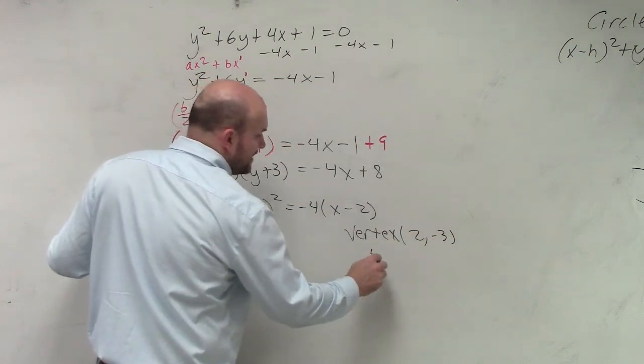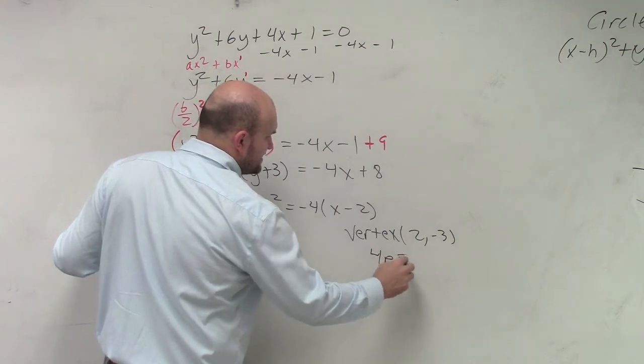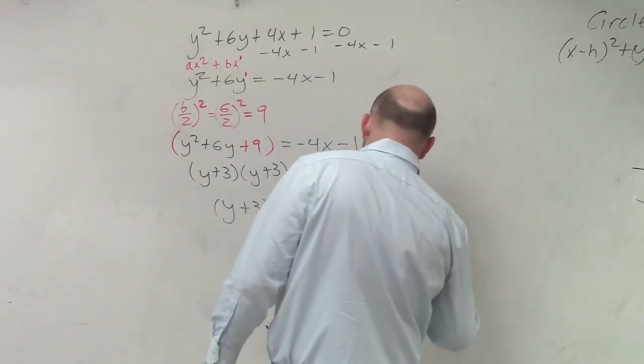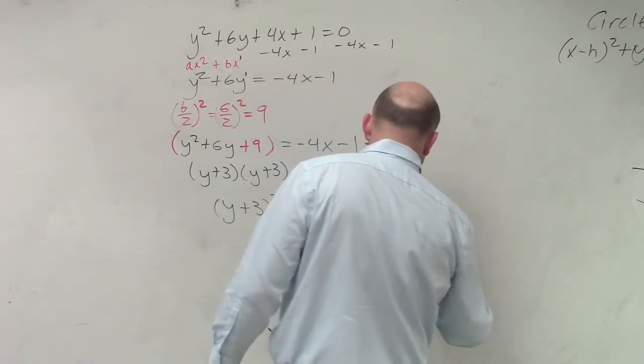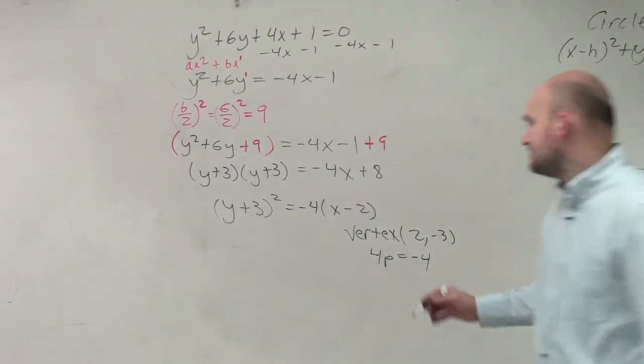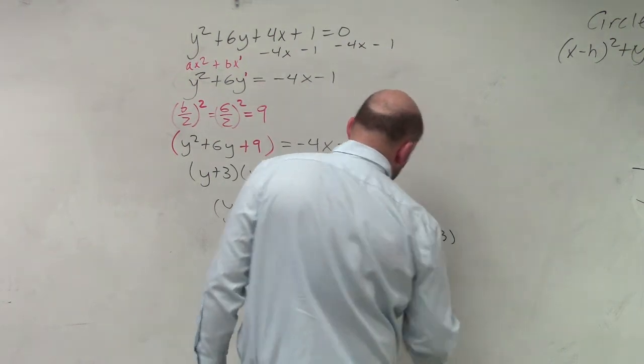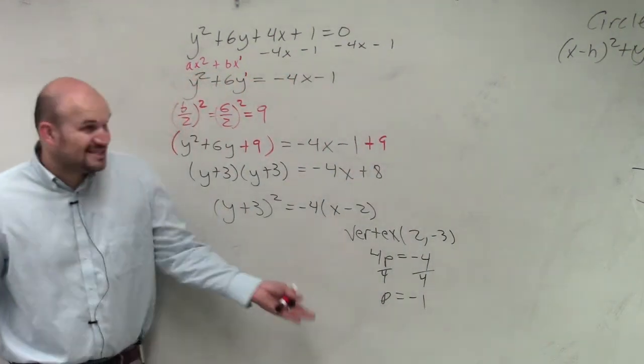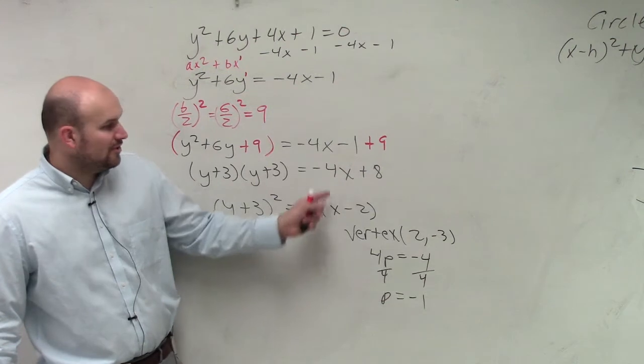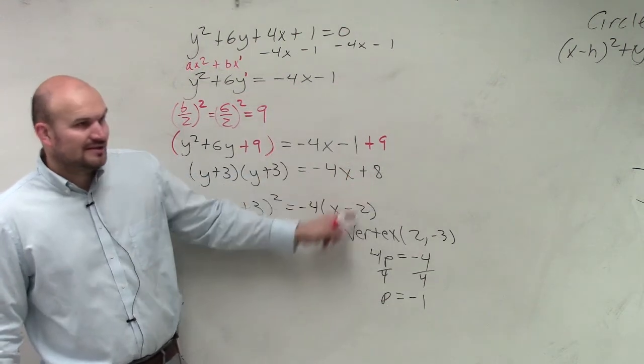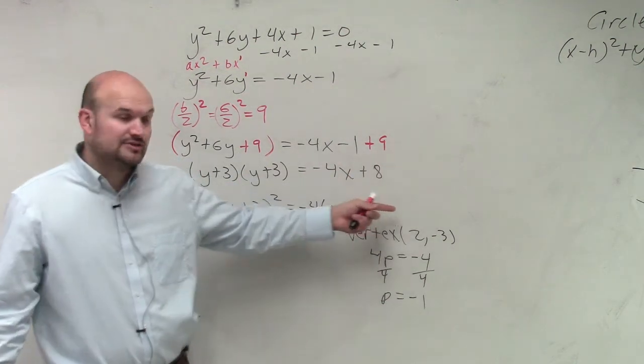I need to find my focus and my vertex. So I need to say what 4p is equal to, which is equal to negative 4. Divide by 4, divide by 4, p is equal to negative 1. And again, guys, the difference here is, yeah, it's still negative 4. But if you didn't factor that out, your vertex would be different, right? And that's a big issue.